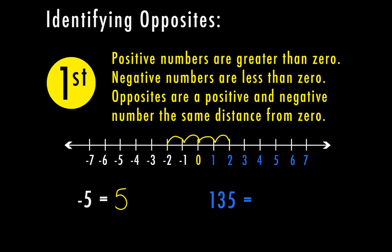The opposite of 135, even though it's not on this number line, is going to be the same distance on the other side of zero, which is negative 135. Opposites are very easy to identify — it's just going to be the positive or the negative of that same number value. A positive and a negative that are the same value, if you add them together, they're going to end up with zero as the answer. So anytime you have a positive and a negative opposite number, their sum is zero.